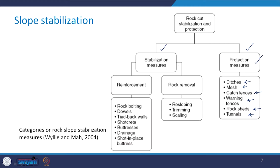Coming to the stabilization measures, the first branch deals with reinforcement of the slope, which can be done by rock bolting, by providing dowels or tie-back walls, constructing buttresses, drainage, and in-place buttresses. We will discuss some of these in detail now.